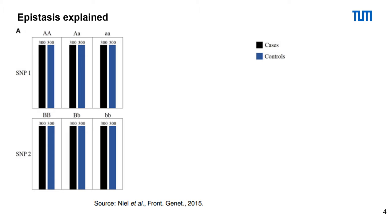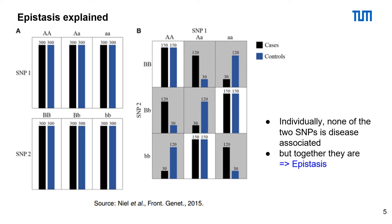If we consider the illustrated example SNPs independently from each other, then we cannot observe any differences between case and control samples. But if we consider them together, we can observe significant differences between case and control samples.